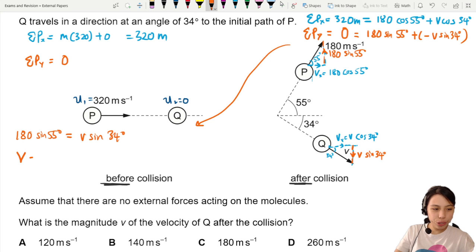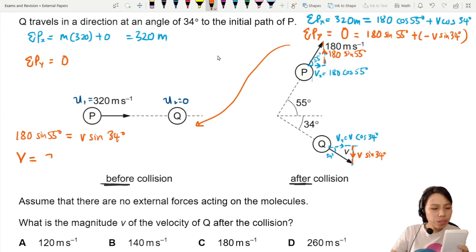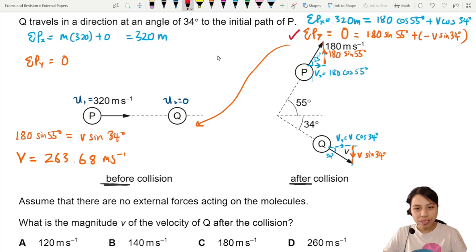I think I can find my answer. Let's find the V. V should be 263.68 meter per second. That's great. I think I already found the answer. I didn't need to use the horizontal at all because we have less unknowns here.